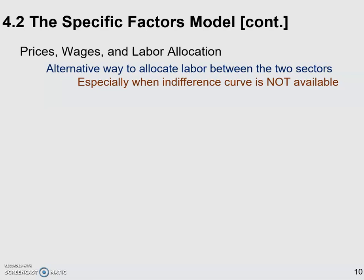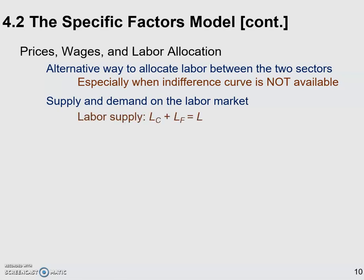Especially when we cannot find the indifference curve, we're going to rely upon the supply and demand on the labor market — something we are quite familiar with since the introductory course. For labor supply: in this economy, the total amount of labor is L, which is given. The amount of labor hired by the cloth sector will be LC, and LF is the amount of labor hired by the food industry. So this will be our economy-wide labor supply.